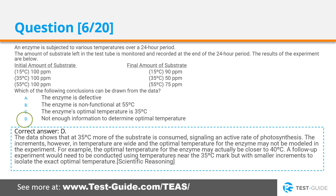Correct answer D. The data shows that at 35 degrees Celsius, more of the substrate is consumed, signaling an active rate of reaction. However, the increments in temperature are wide, and the optimal temperature for the enzyme may not be modeled in the experiment. For example, the optimal temperature for the enzyme may actually be closer to 40 degrees Celsius. A follow-up experiment would need to be conducted using temperatures near the 35 degrees Celsius mark, but with smaller increments to isolate the exact optimal temperature.